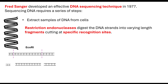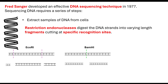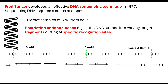For example, ECO-RI gives us three strands, and BAM-HI gives us two fragments. If we put the two together, we would end up with four fragments. So by putting in restriction endonucleases, we can create DNA fragments of different lengths.